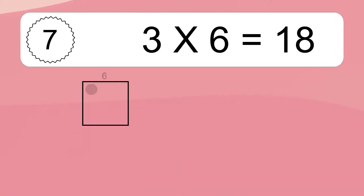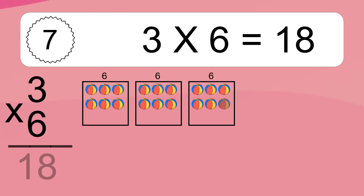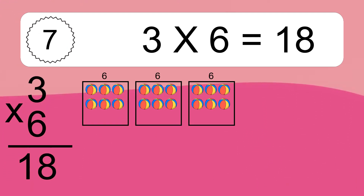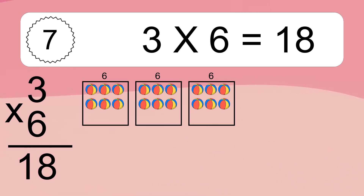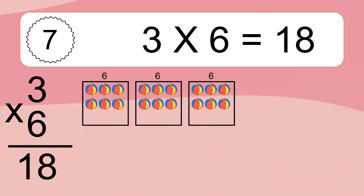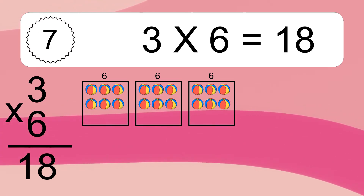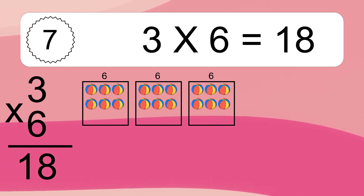3 times 6 equals 18. We have 3 boxes, and each box has 6 colorful balls inside. If you count all the balls in all the boxes together, you will have 3 times 6 balls. This equals 18 balls.